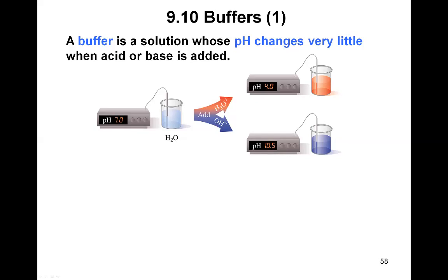Let's look at an example to understand what is a solution without a buffer. If we take, for example, distilled water or pure water, which has a pH of 7.0, and we monitor the pH and decide to add a few drops of a strong acid — H3O+ here symbolizes the acid — you will see the pH drop from 7.0 to 4.0. On a scale of 0 to 14, this is a large drop in the pH value.